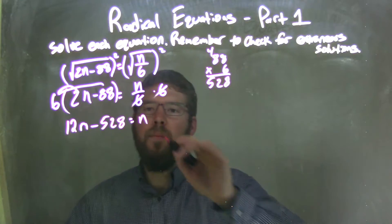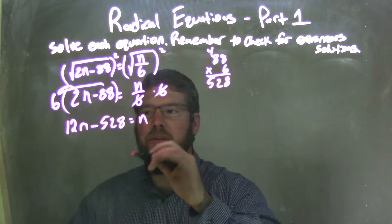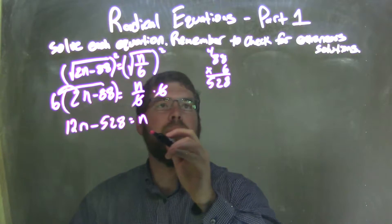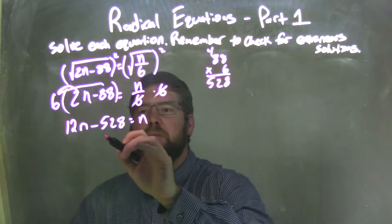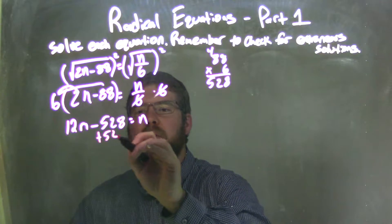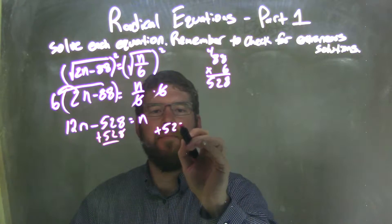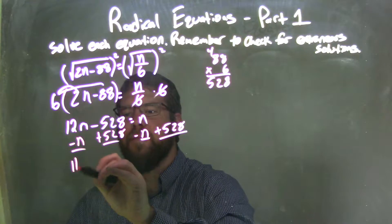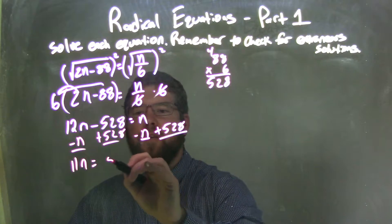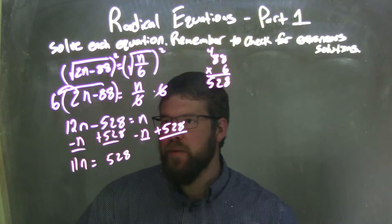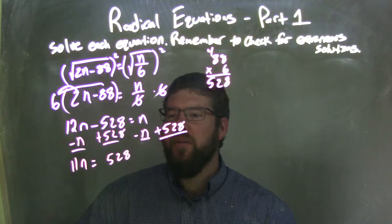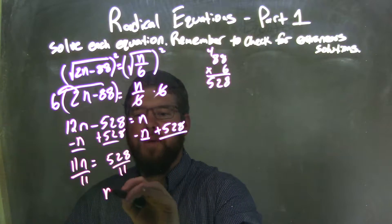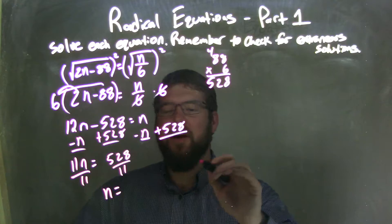And so, from there, I need to simplify. So, let's go add 528 to both sides, and I'm going to subtract the n to both sides, leaving me with 11n on the left equals 528 on the right. So now I have to divide by 11. So, divide by 11 on both sides, giving me n equals whatever 528 divided by 11 is.